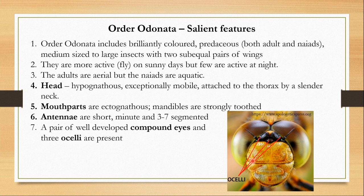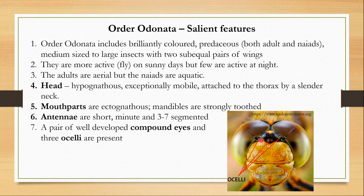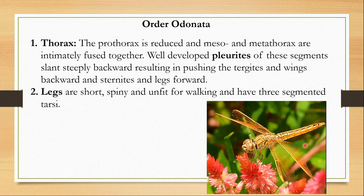The mandibles are strongly toothed because they are voracious eaters and need to chew other insects. The antennae are really short, three to seven segmented, bristle-like, and very tiny — from a distance you won't even see them. There is a pair of well-developed compound eyes and three ocelli present; the ocelli are simple eyes.